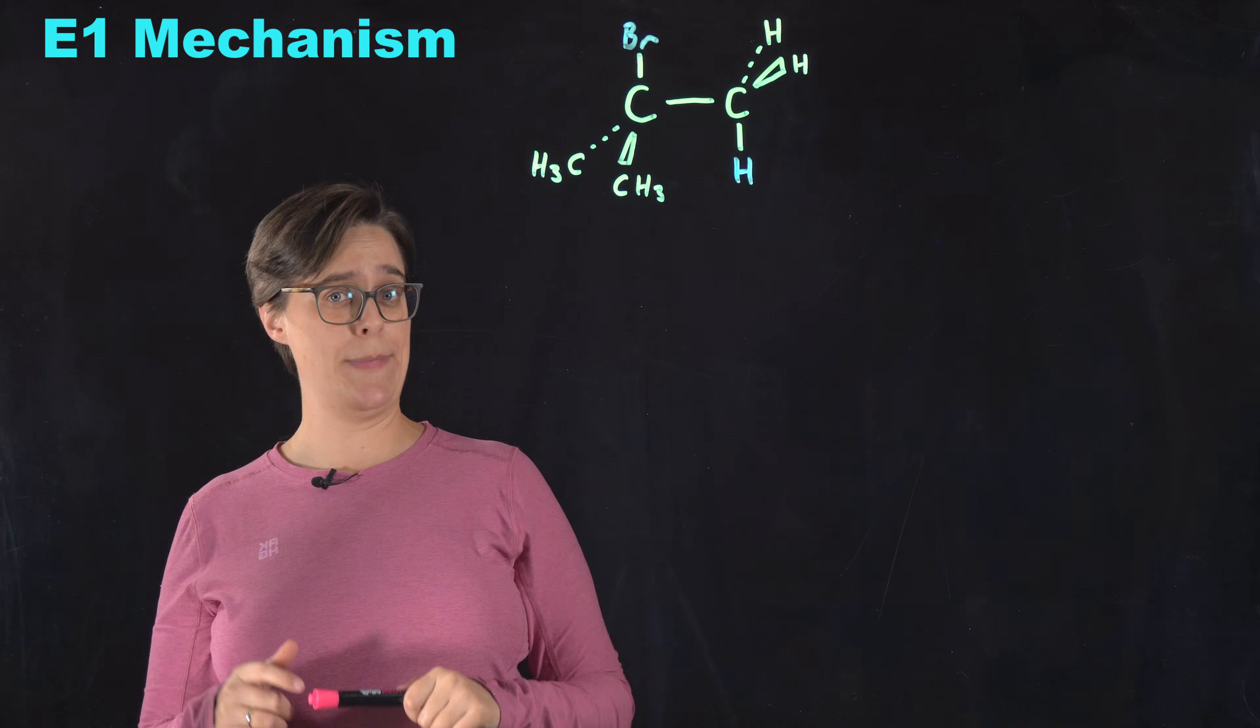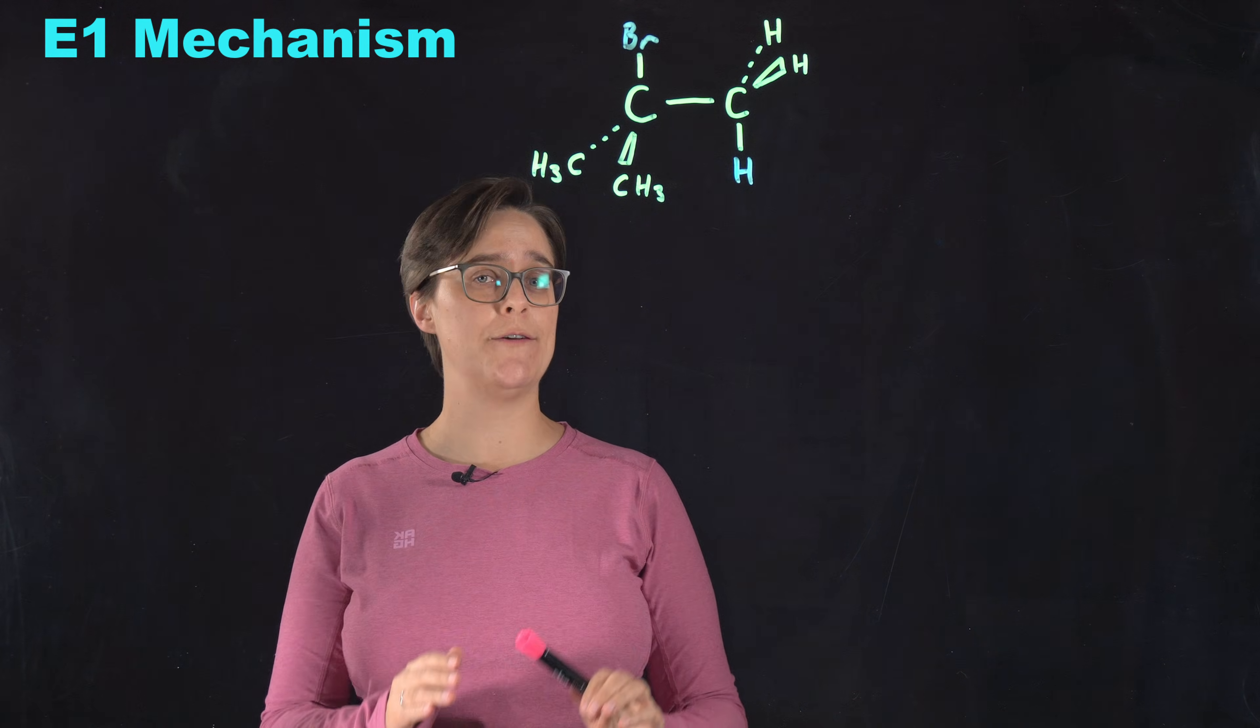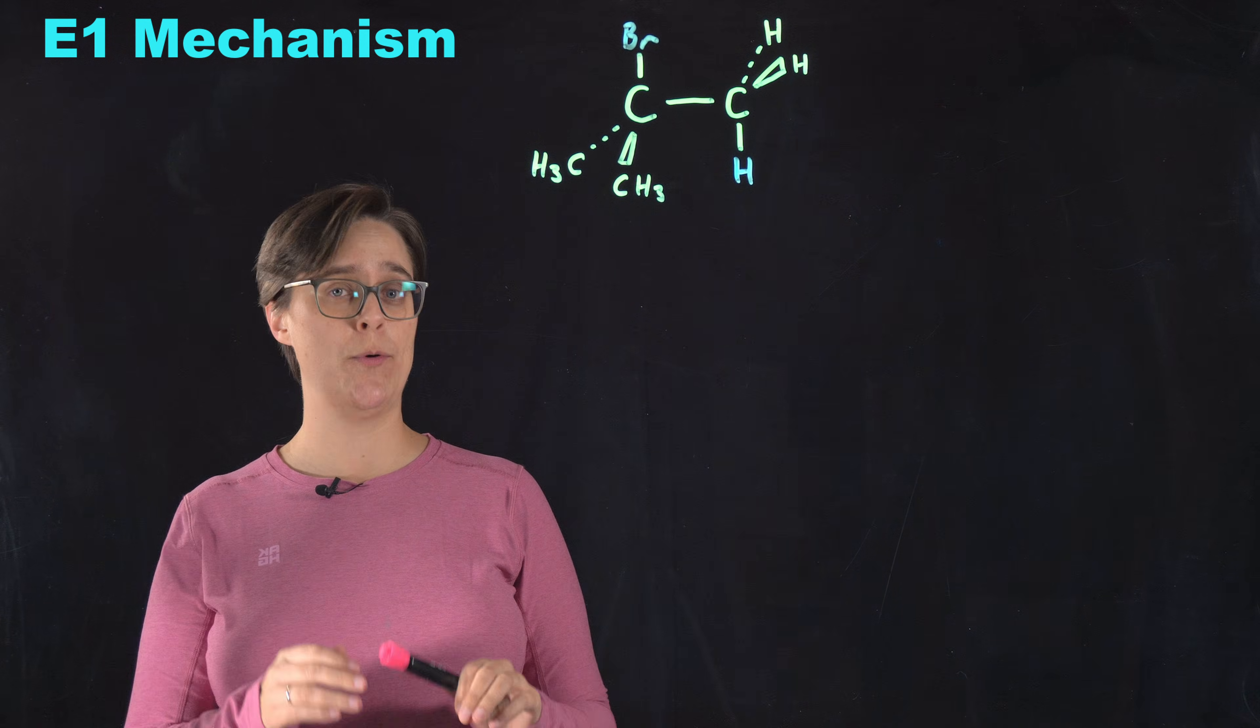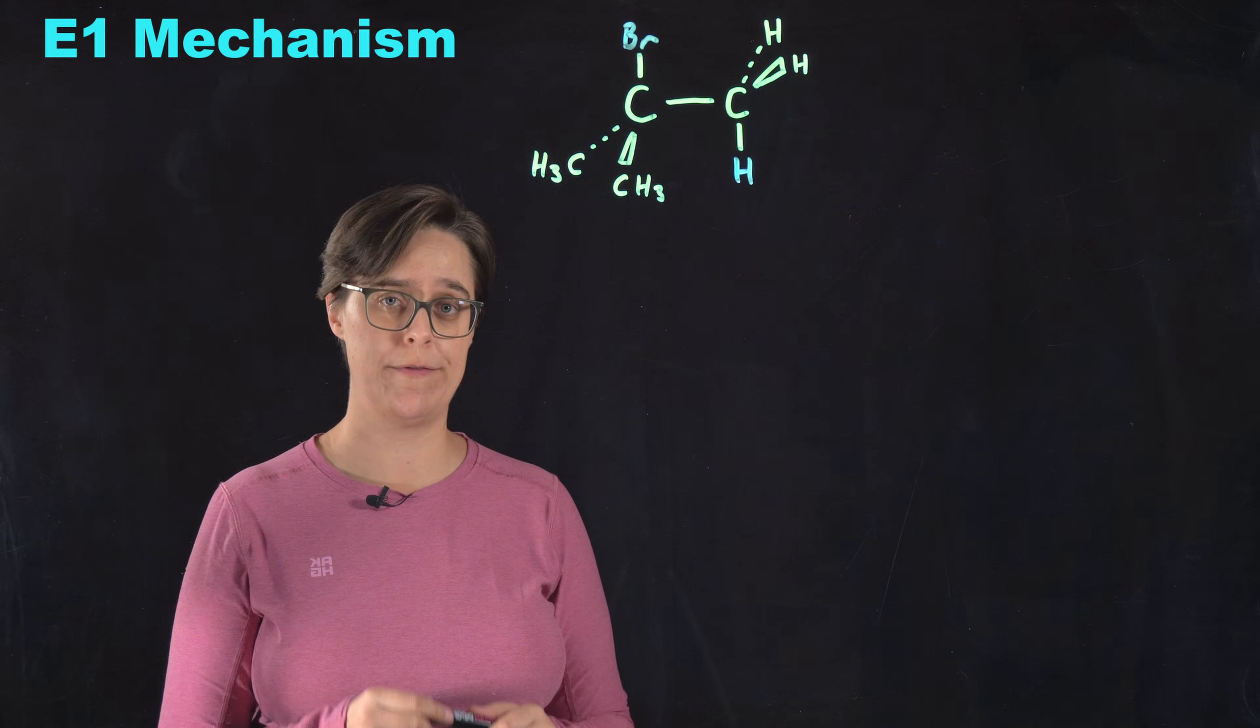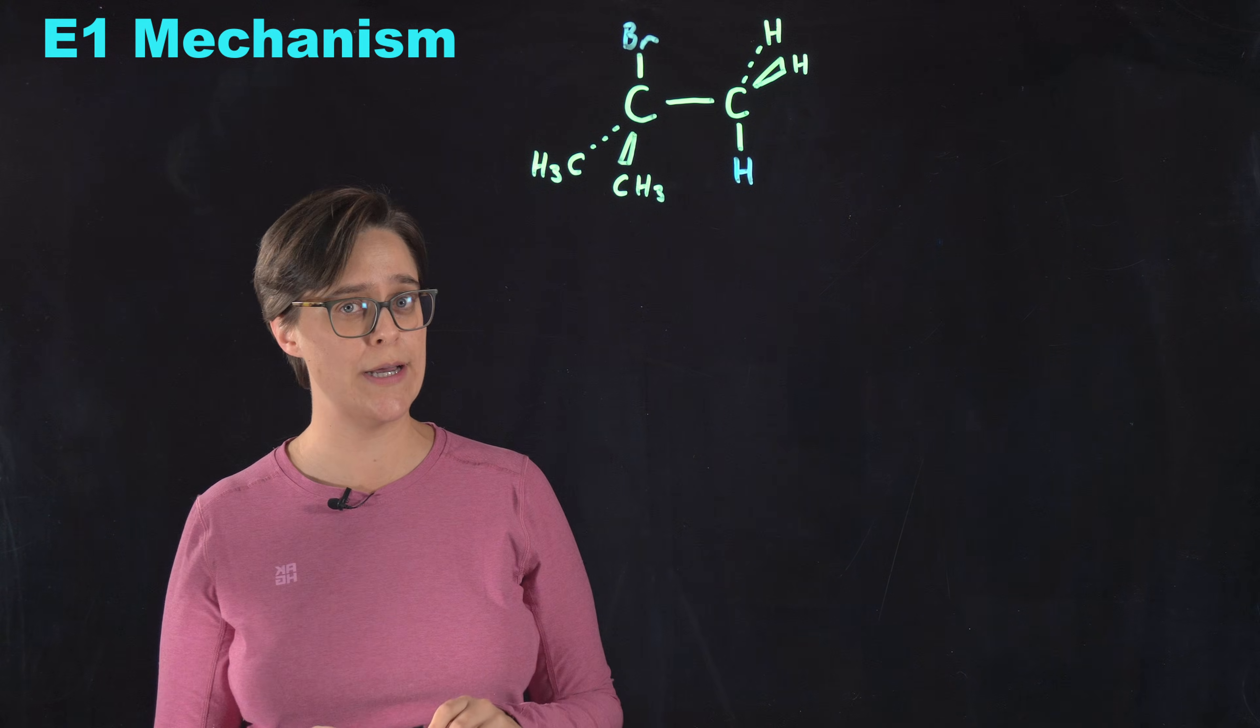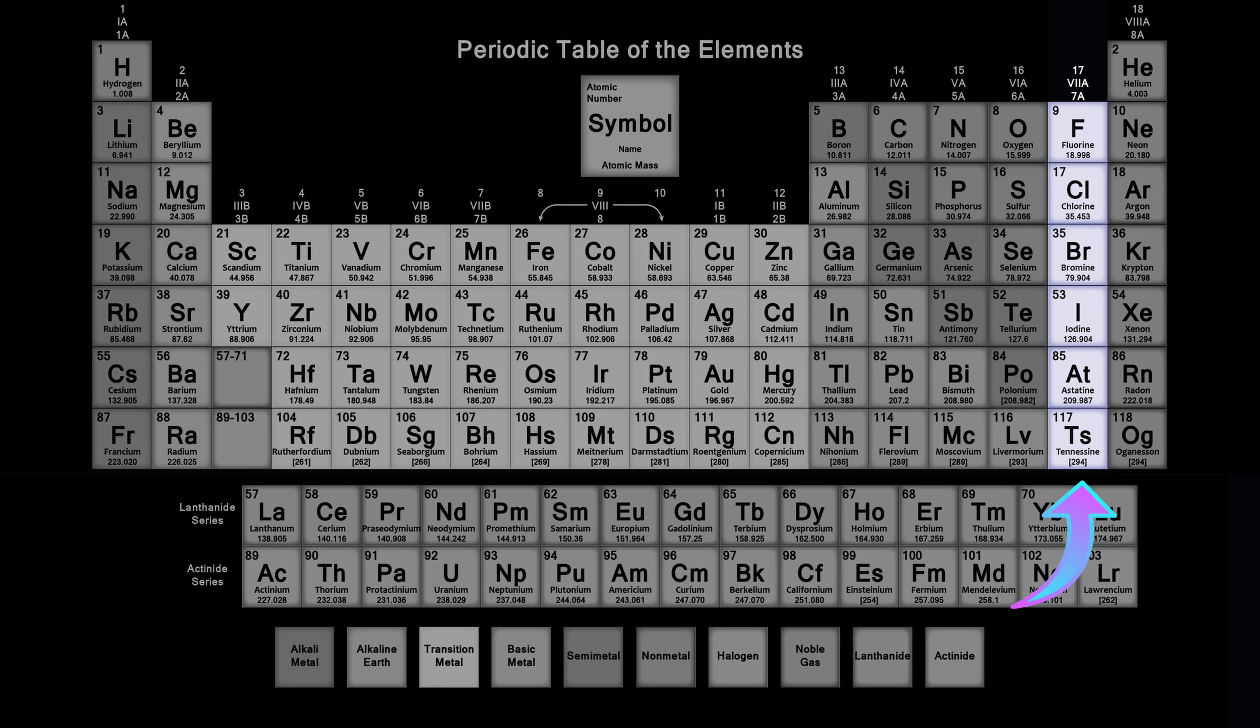Let's use this example to learn the mechanism. The first thing we need to do is to identify the leaving group. The leaving group is going to be in a polar covalent bond with a carbon, and it's going to be something that is more electronegative than that carbon. In this case it's the bromine. Most of the time the leaving group is a halogen, meaning something in group 7a of the periodic table.